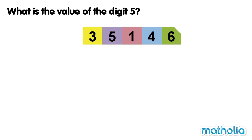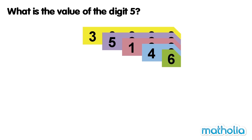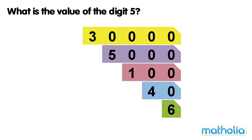What is the value of the digit 5? Place value cards have been used to make the number 35146. Let's find the value of the digit 5. Let's separate the number into its different place value cards. We can see that the digit 5 has a value of 5000.